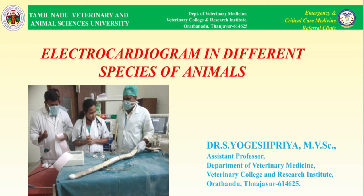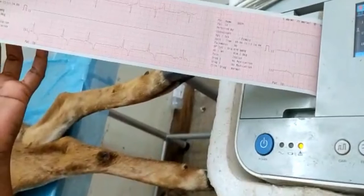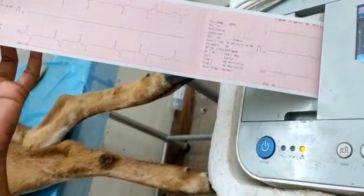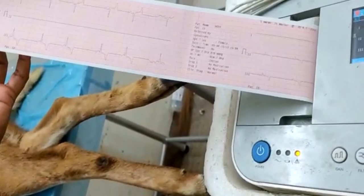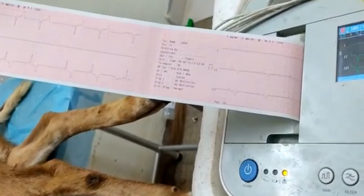An electrocardiogram, shortly called ECG or EKG, is a method of measuring, displaying, and recording the electrical activity of the heart. It is a painless, non-invasive way to help diagnose many common cardiac problems in all patients. Electrocardiography is the process of producing an electrocardiogram — a graph of voltage versus time of the electrical activity of the heart.